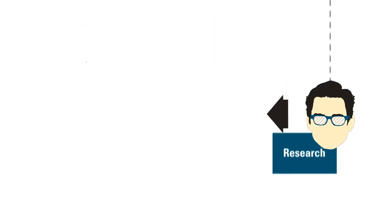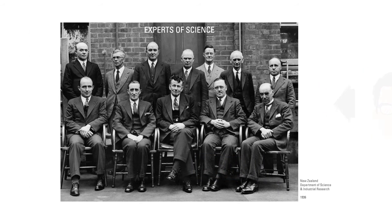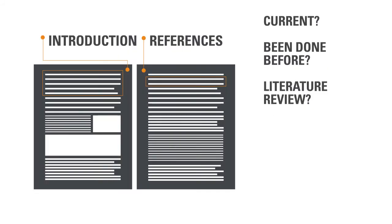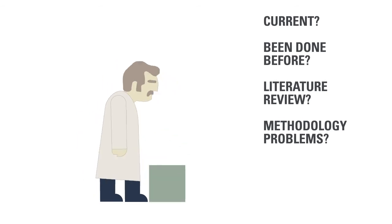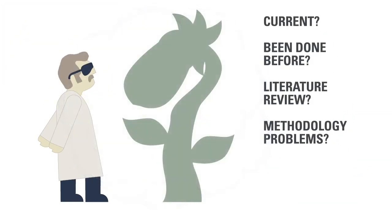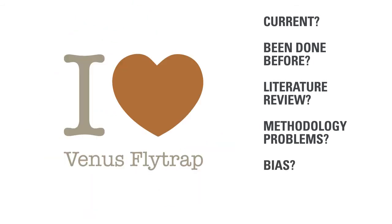During a blind review, a journal editor sends a submitted article to other experts. These experts look for things such as: is the research current? Has the research been done before? Does the author include a thorough literature review? Does the paper's methodology — for example, a clinical trial or a randomized controlled experiment — have any problems? Has any bias been introduced into the study?